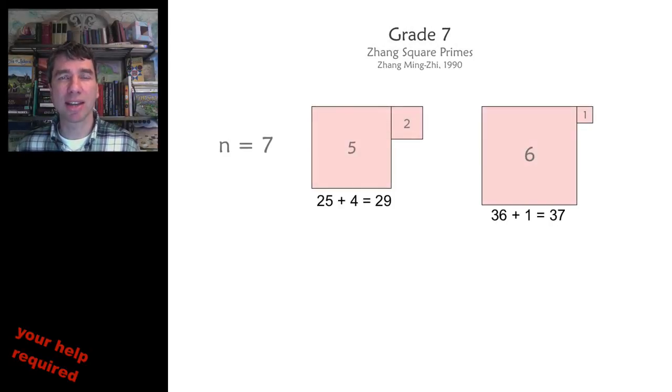In 1990, Zhang Mingzhi asked that for any odd number, is it always possible that you can find two integers that add up to that number so that their squares are equal to a prime? So here, the answer is yes for 7, because 5 plus 2 is equal to 7, and 25 plus 4 is equal to 29, which is prime.